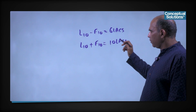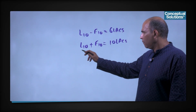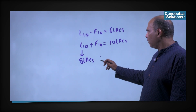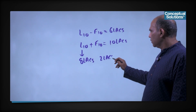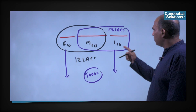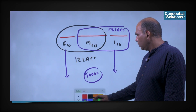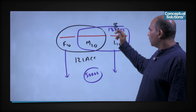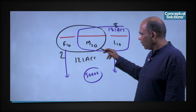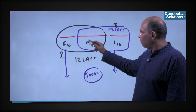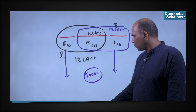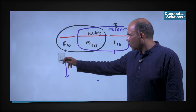From these two equations — L10 − F10 = 6 lakhs and F10 + L10 = 10 lakhs — we get L10 = 8 lakhs and F10 = 2 lakhs. Since F10 + M20 = 12 lakhs and F10 = 2 lakhs, M20 = 10 lakhs.